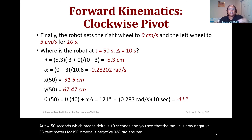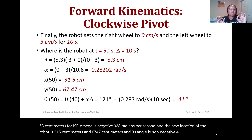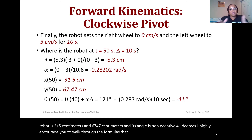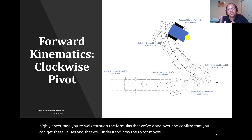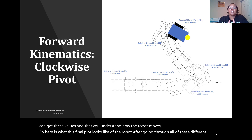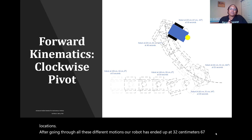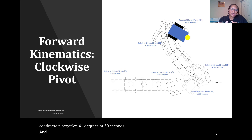The new location of the robot is (31.5 cm, 67.47 cm) with an angle of −41 degrees. I highly encourage you to walk through these formulas and confirm you can get these values and understand how the robot moves. Here is what the final plot looks like after all these different motions — our robot has ended up at approximately (32 cm, 67 cm) at −41 degrees at 50 seconds.